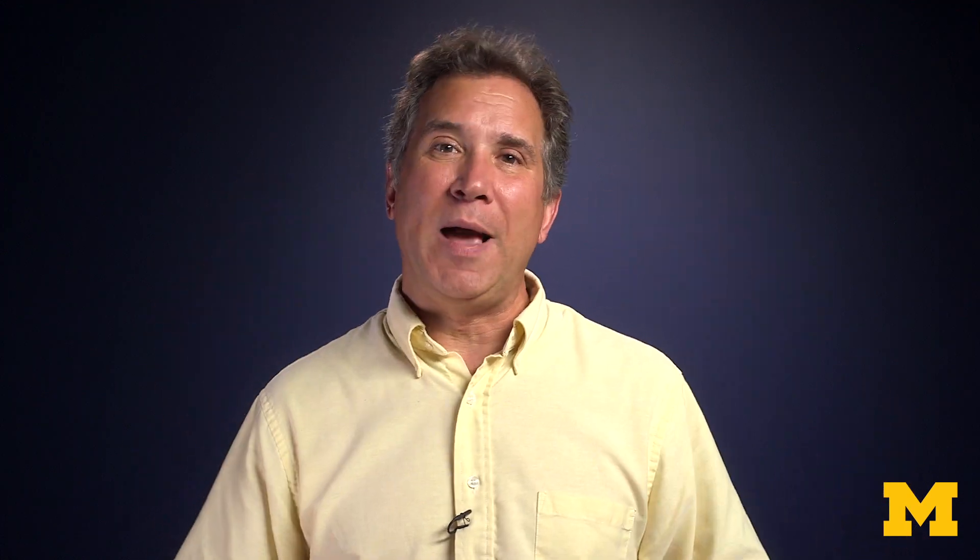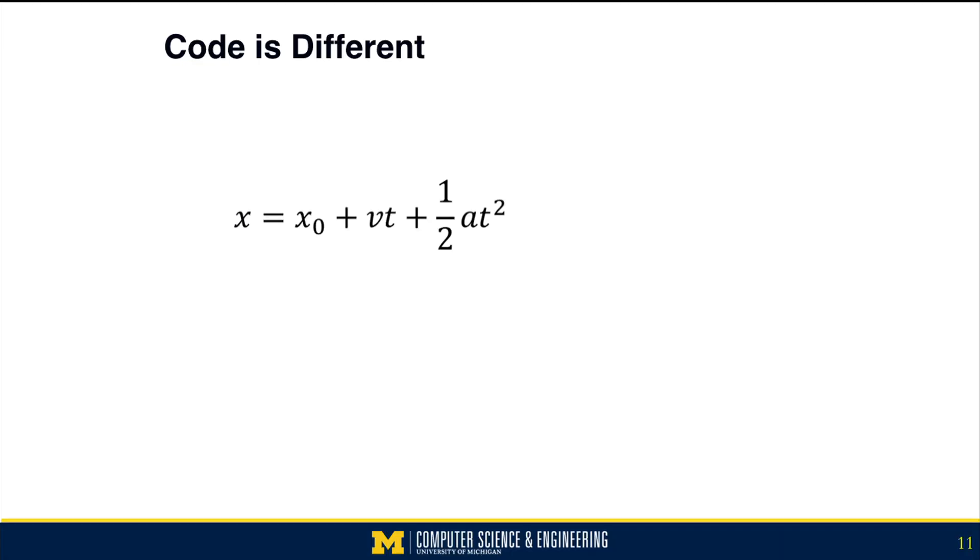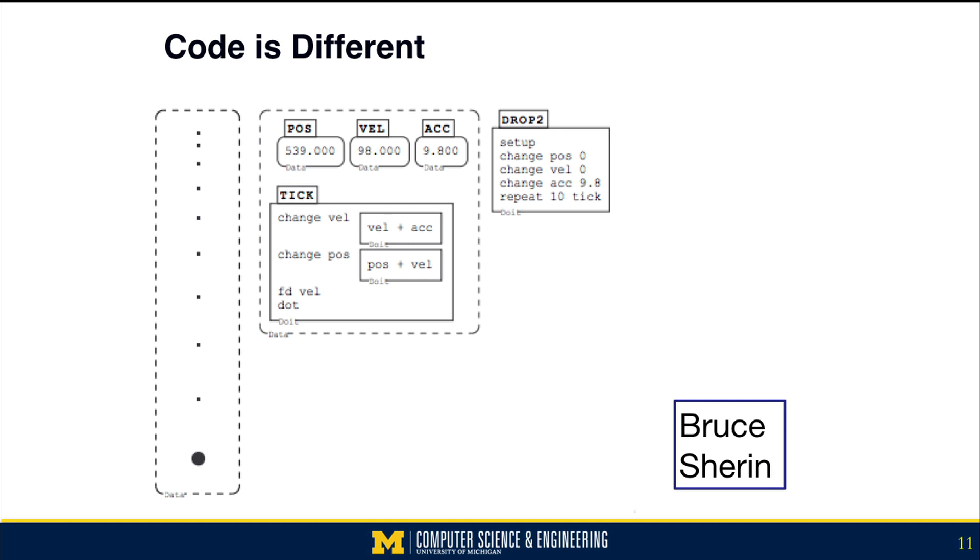Bruce Sherin found that when he teaches students with this equation versus teaching them with a code representation, they learn different things. This is the same thing, but in terms of Boxer code.